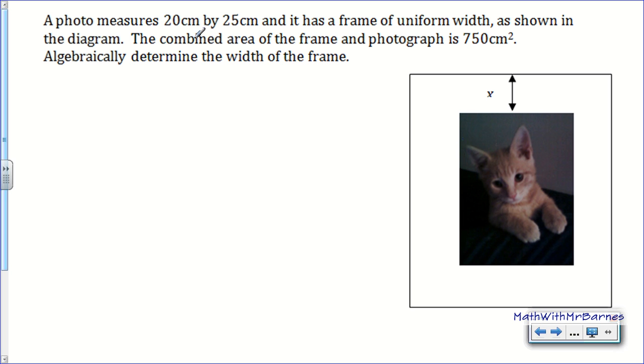A photo measures 20 cm by 25 cm and it has a frame of uniform width, as shown in the diagram. The combined area of the frame and the photograph is 750 cm squared. Algebraically determine the width of the frame. So you can see the frame uniform width here, x. Even though it doesn't look uniform on the screen, it actually should be.